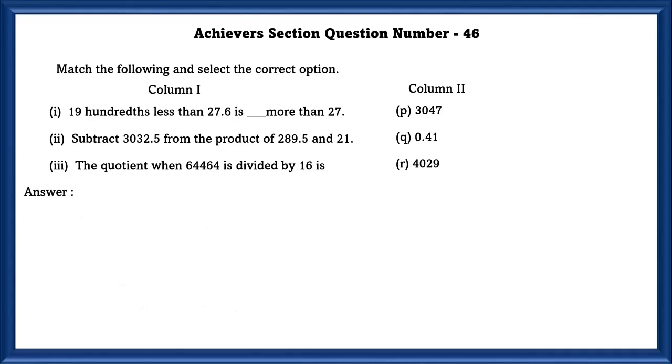First one, 19 hundredths less than 27.6 is dash more than 27. 19 hundredths is equal to 0.19. 19 hundredths less than 27.6 is 27.41, and 27.41 is 0.41 more than 27. So first is equal to the Q option.